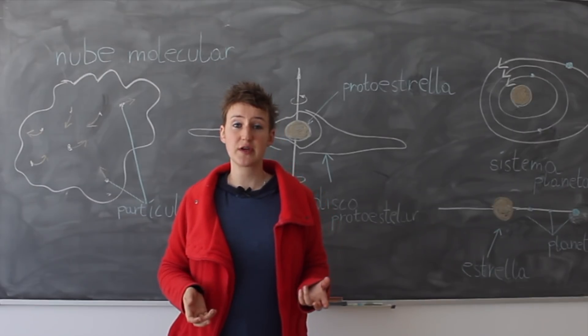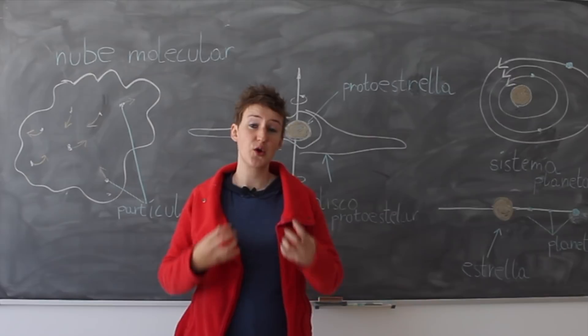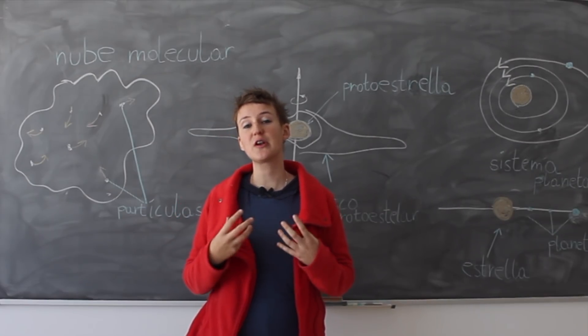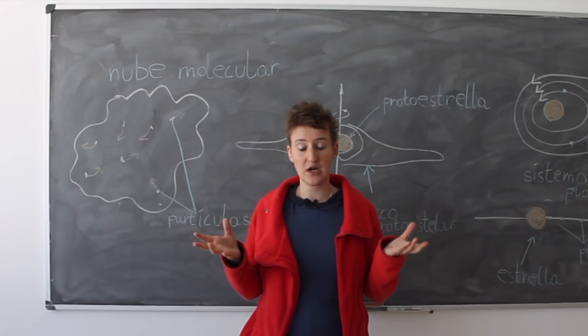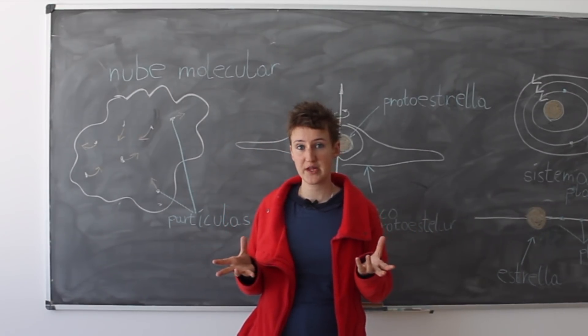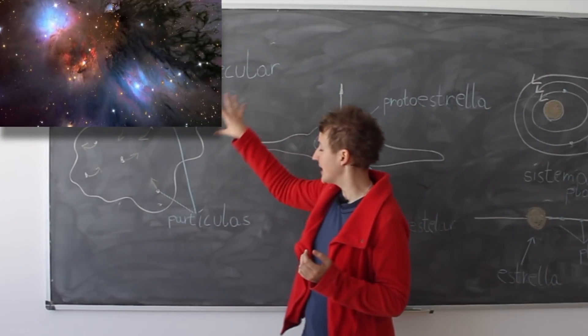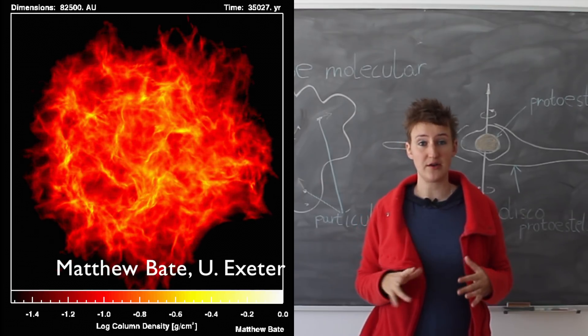The answer to this question lies within how a star or the Sun formed and has something to do with the law of angular momentum conservation. How do stars form in general? They form from a molecular cloud where there are a lot of particles, molecules in there. They are moving randomly around.